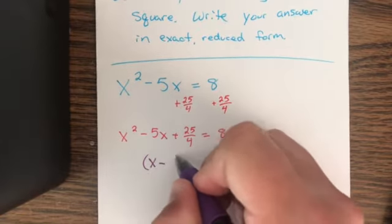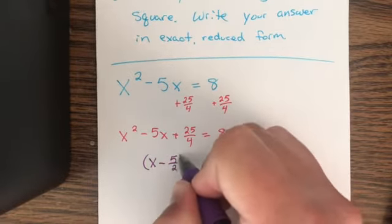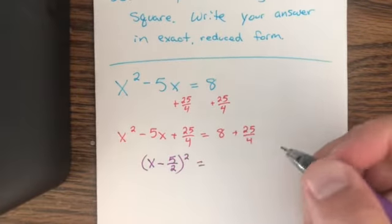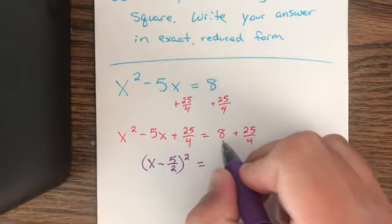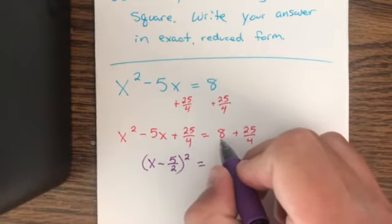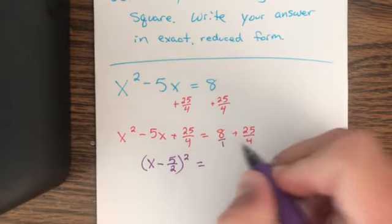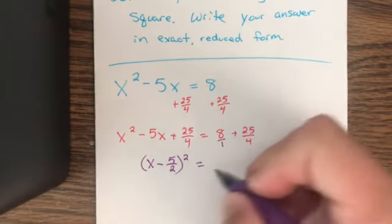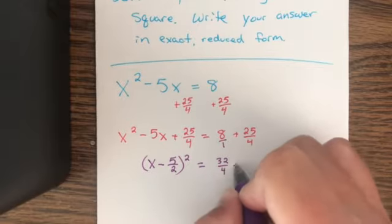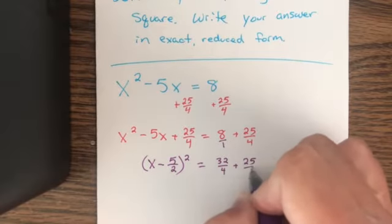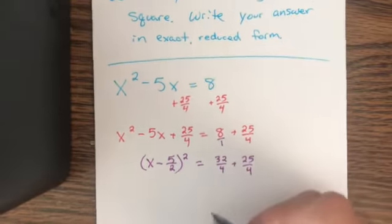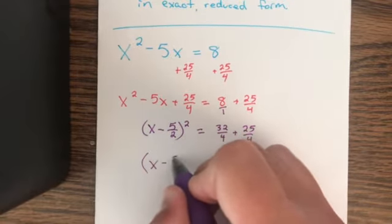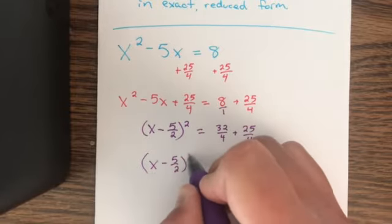(x - 5/2)² equals... we're going to want a common denominator, so we'll think of 8 as 8/1. When we multiply by 4/4 we get 32/4 plus 25/4, which turns out to be 57/4. So we'll have (x - 5/2)² = 57/4.